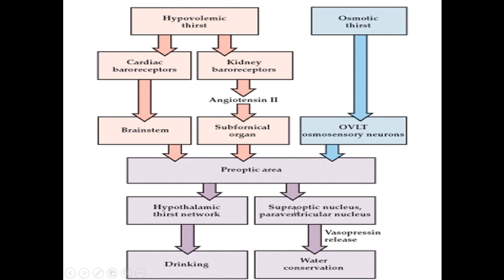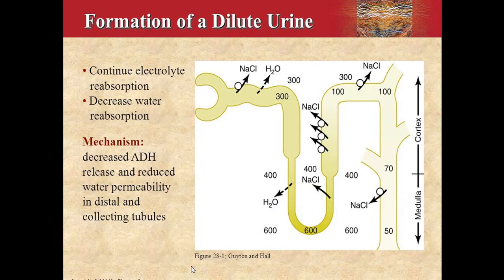So all these pathways — whether from baroreceptors or from osmoreceptors — have their final effect on the pre-optic nucleus of the hypothalamus. This pre-optic area stimulates the supra-optic nucleus and the paraventricular nucleus, which causes ultimately more drinking of water, and on the other side the thirst center is stimulated. So on one side you drink more water, and on the other side you conserve water in your body — this whole mechanism operates whether the thirst is due to hypovolemia or due to more sodium.